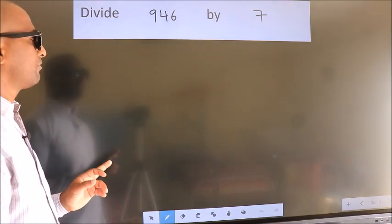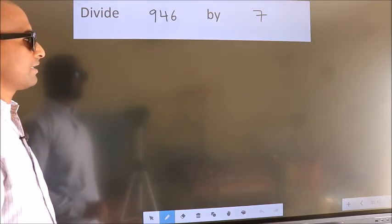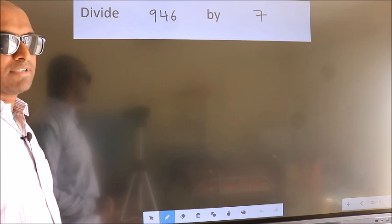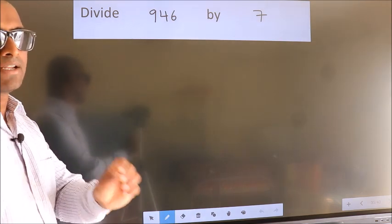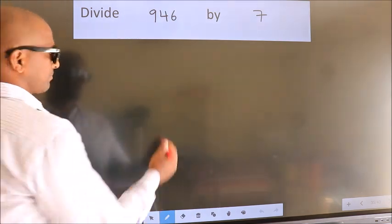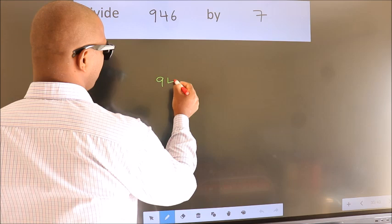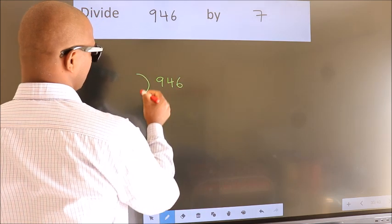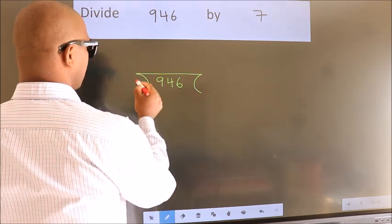Divide 946 by 7. To do this division, we should frame it in this way. 946 here, 7 here.